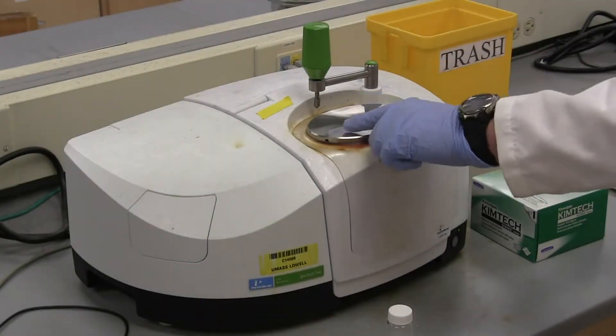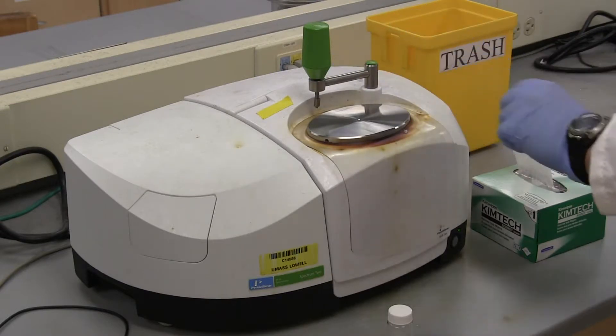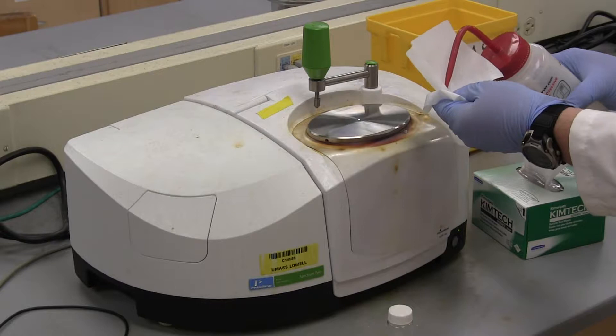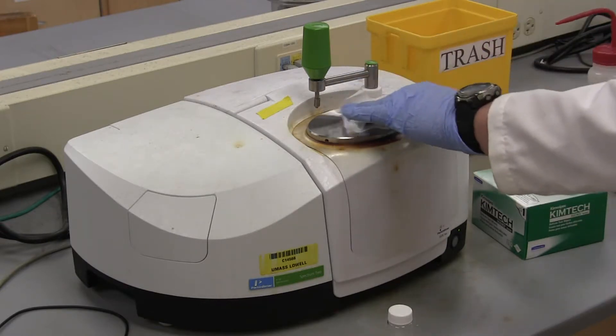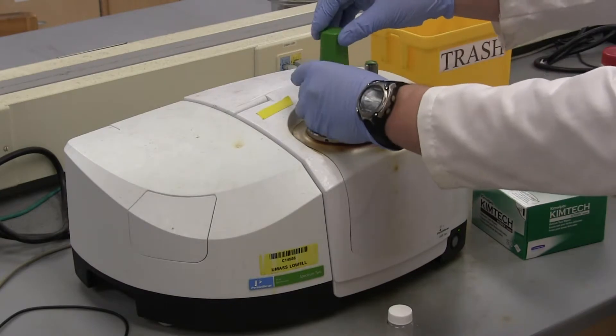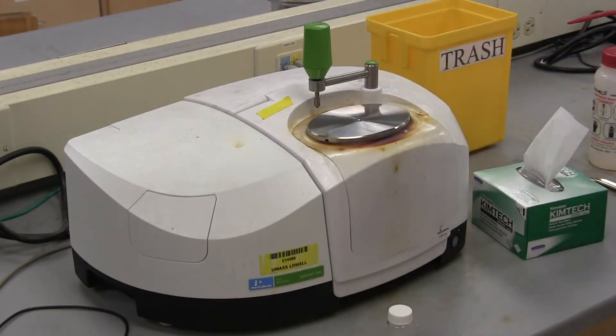The first step is to clean the zinc selenide diamond crystal as well as the tip of the arm with acetone. Simply squirt a little bit of acetone onto a kimwipe and wipe it on the crystal. Do not drip acetone onto the instrument though, since acetone will dissolve the plastic.